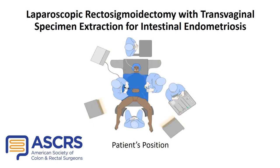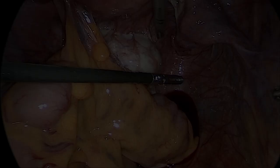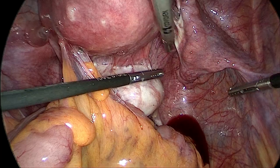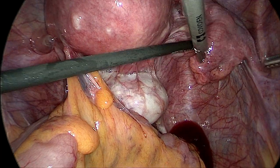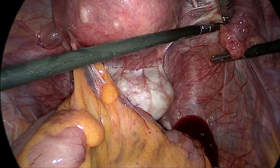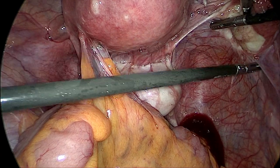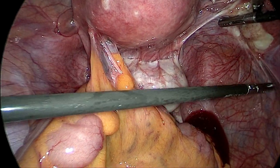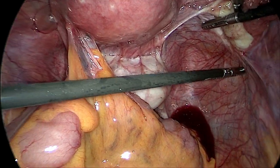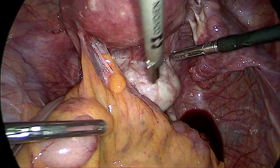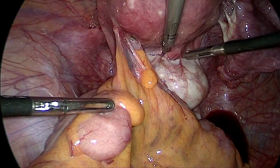The patient was placed in a slight Trendelenburg in the dorsal decubitus position. The surgeon then analyzed and identified fibrotic adhesions in the abdominal cavity secondary to the endometriosis.